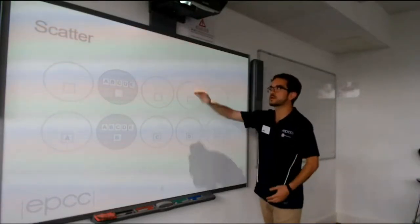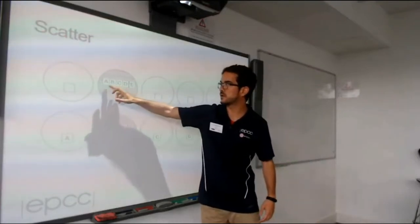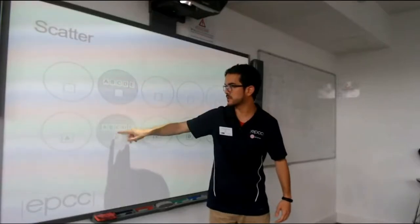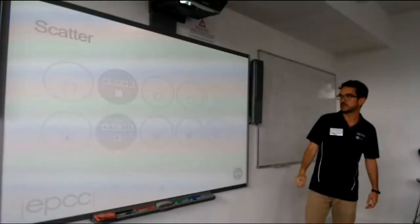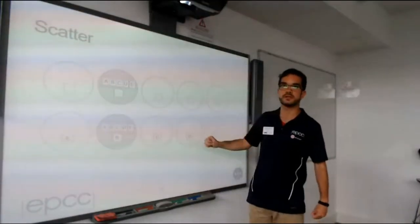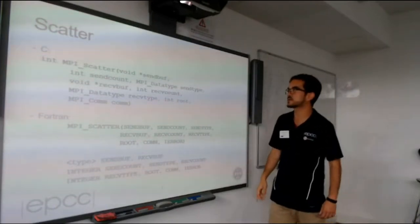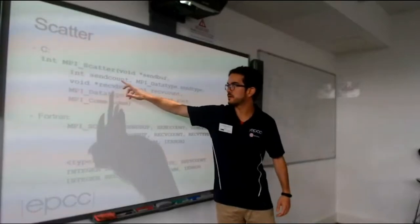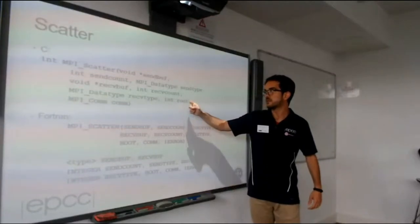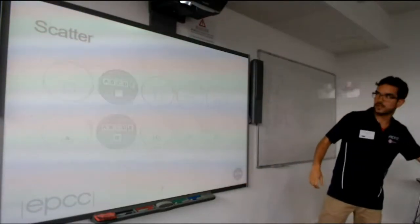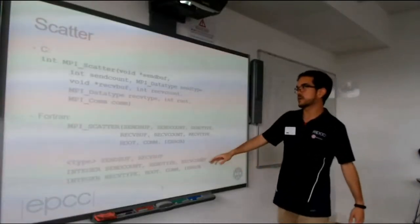Another function is MPI Scatter. For example, we have five values A, B, C, D, E in one process, and we want to send A to the first process, B to the second, and so on. If we perform MPI_Scatter, each process receives its corresponding value. The syntax includes: the send buffer, the number of elements and type to send; the receive buffer, the count and type; the root process — which in this case should be process one — and the communicator.